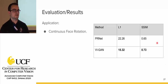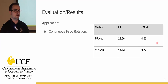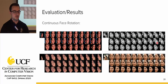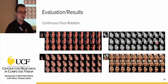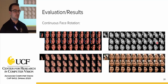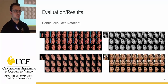The next application is continuous face rotation using the 300W-LP dataset. They compared against PRNet, a model optimized for continuous face rotation, and outperformed it. The images show ground truth on top, VIGAN in the middle, and PRNet at the bottom. VIGAN does a very good job of rendering similar to the ground truth, while the other model struggles particularly with the background.